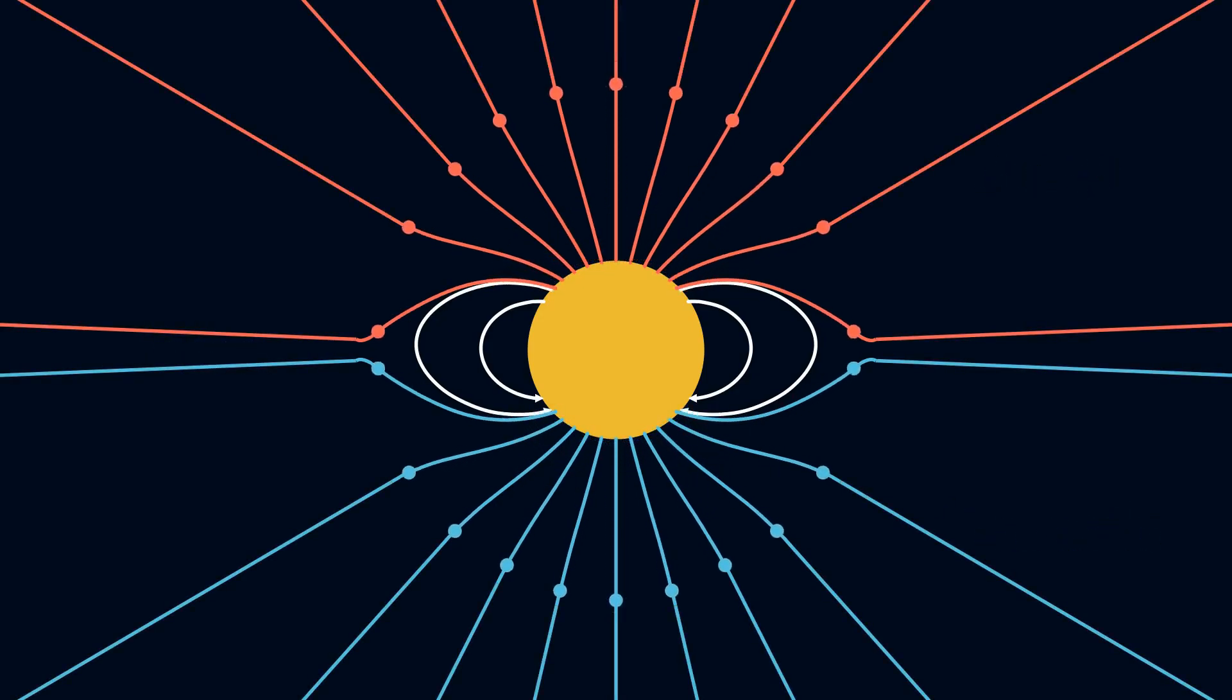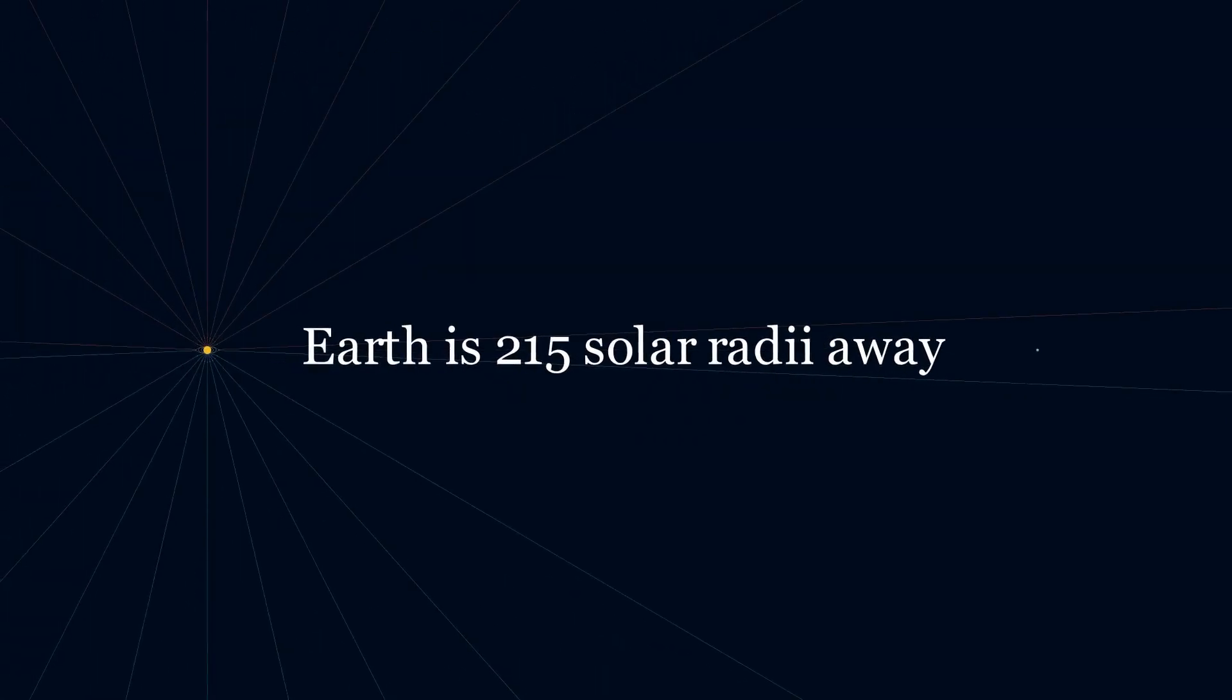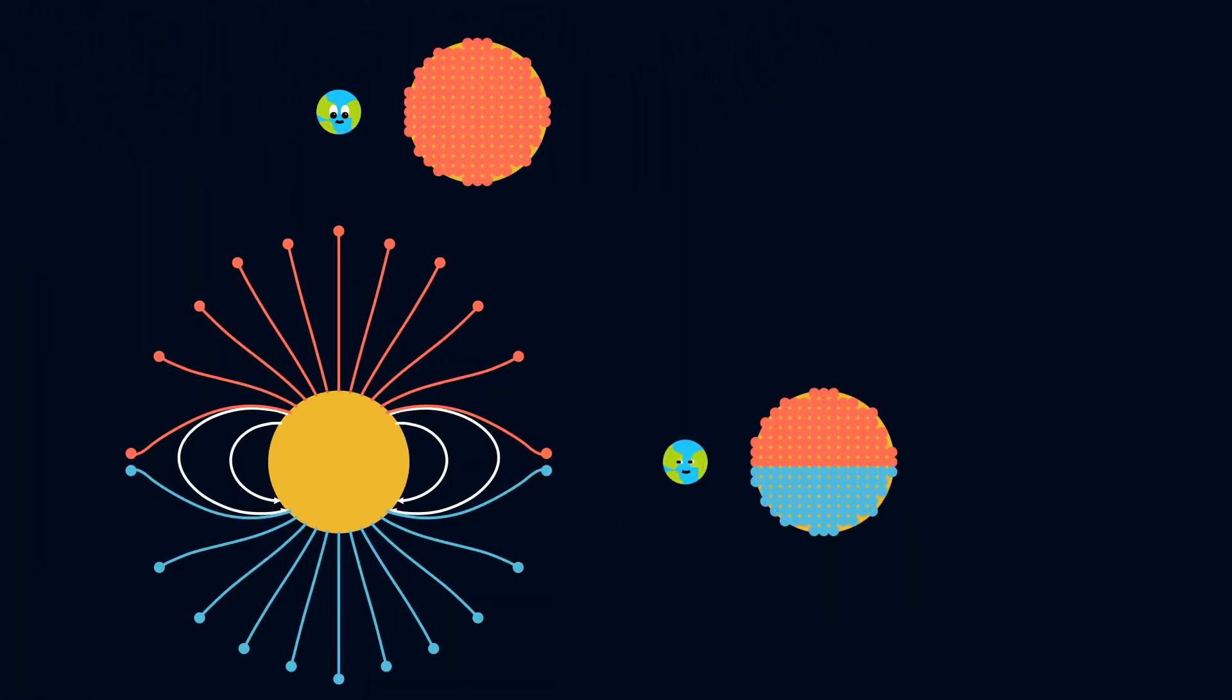The solar wind travels out along these open field lines, which become straight past three solar radii. Looking from the side, we can see two hemispheres with opposite magnetic field directions.